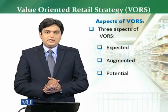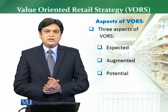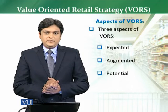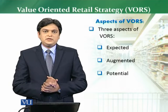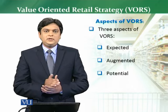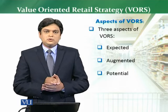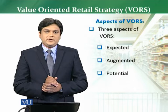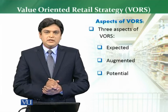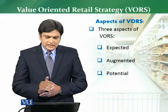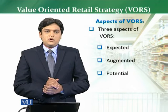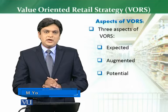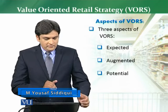Our last topic of discussion was retail value chain. Now we are going to discuss the different aspects of value-oriented retail strategy — normally we call it VORS. The value-oriented retail strategy has three aspects which we are going to discuss one by one: the first one is expected, the second one is augmented, and the third one is potential.